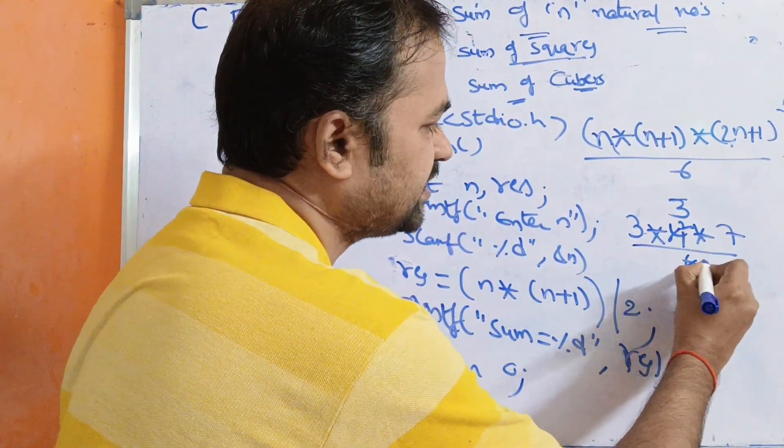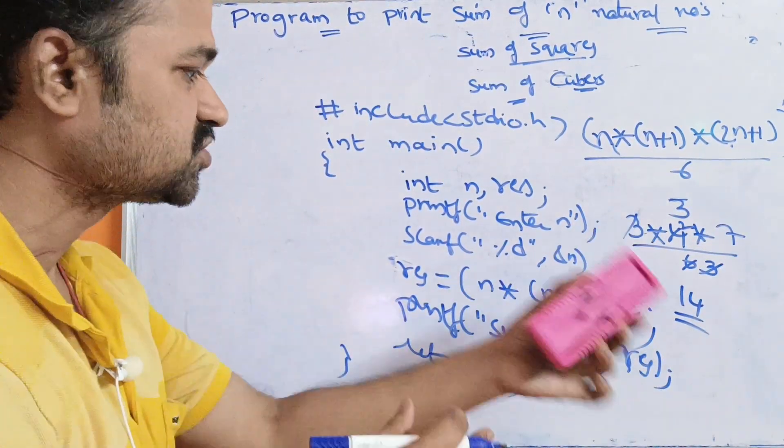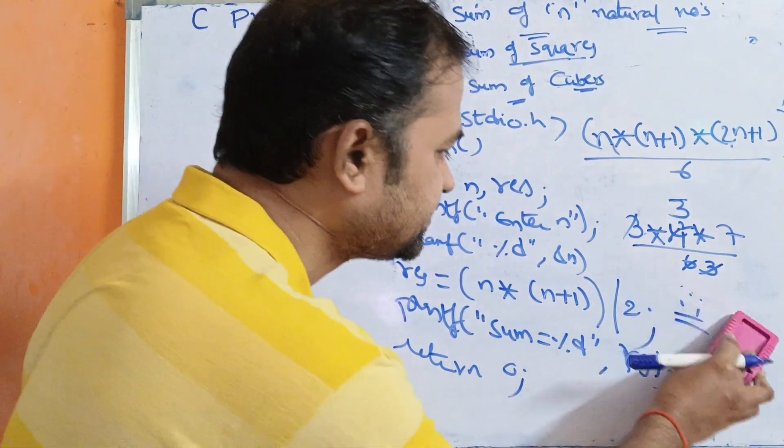2 times 2 is 4, 2 times 3 is 6. So 2 into 7 means 14. So 14 is the result. So let us change the formula.